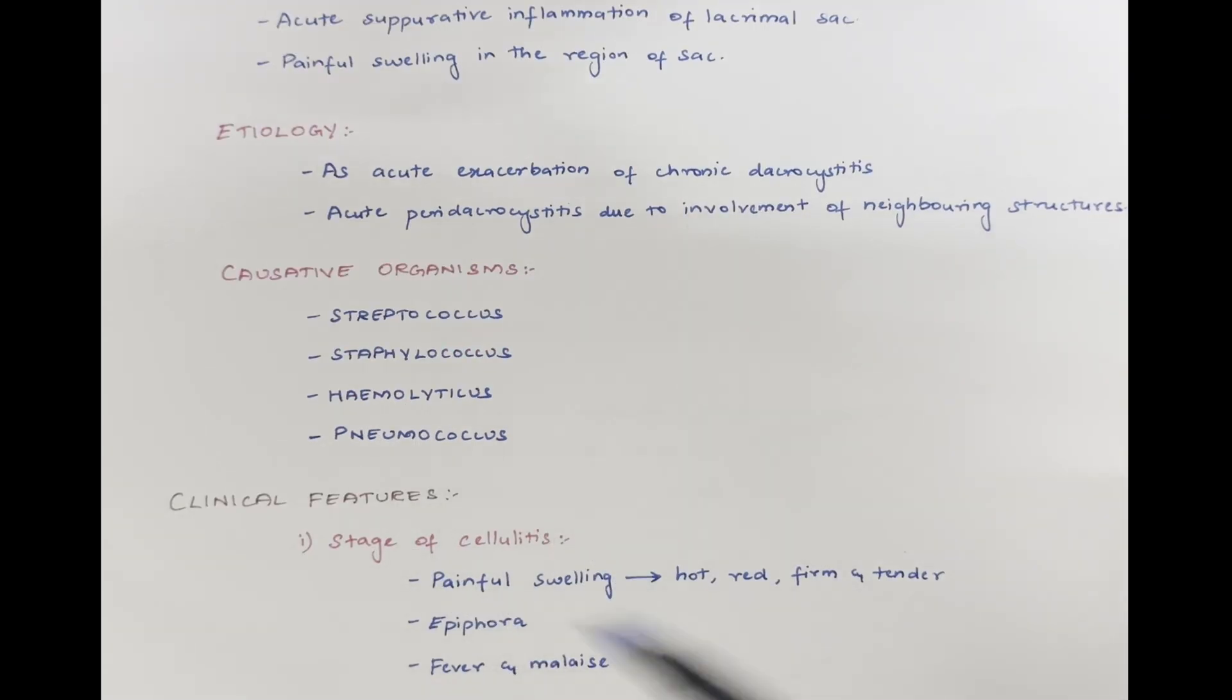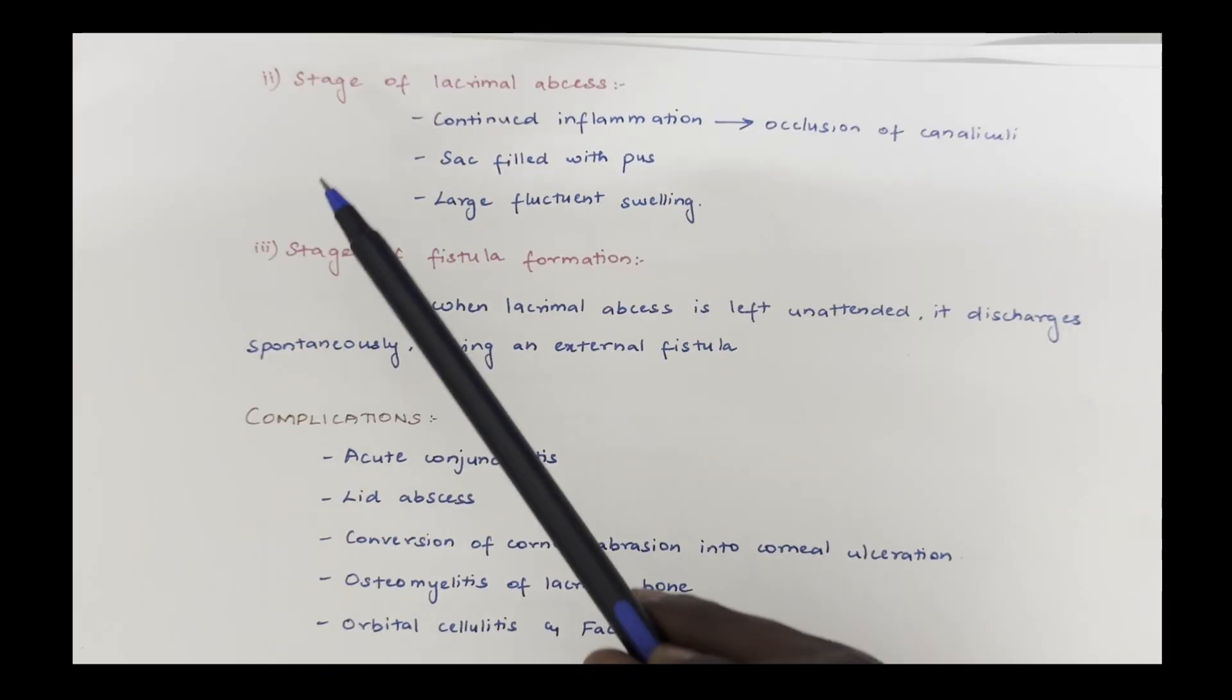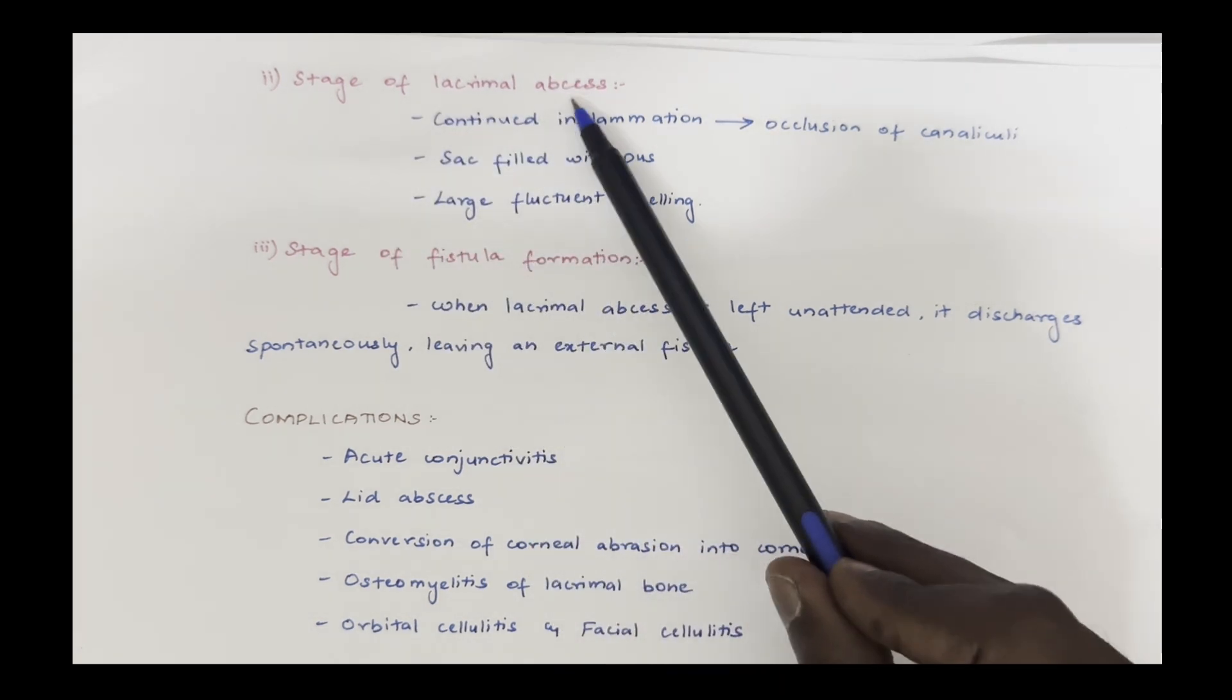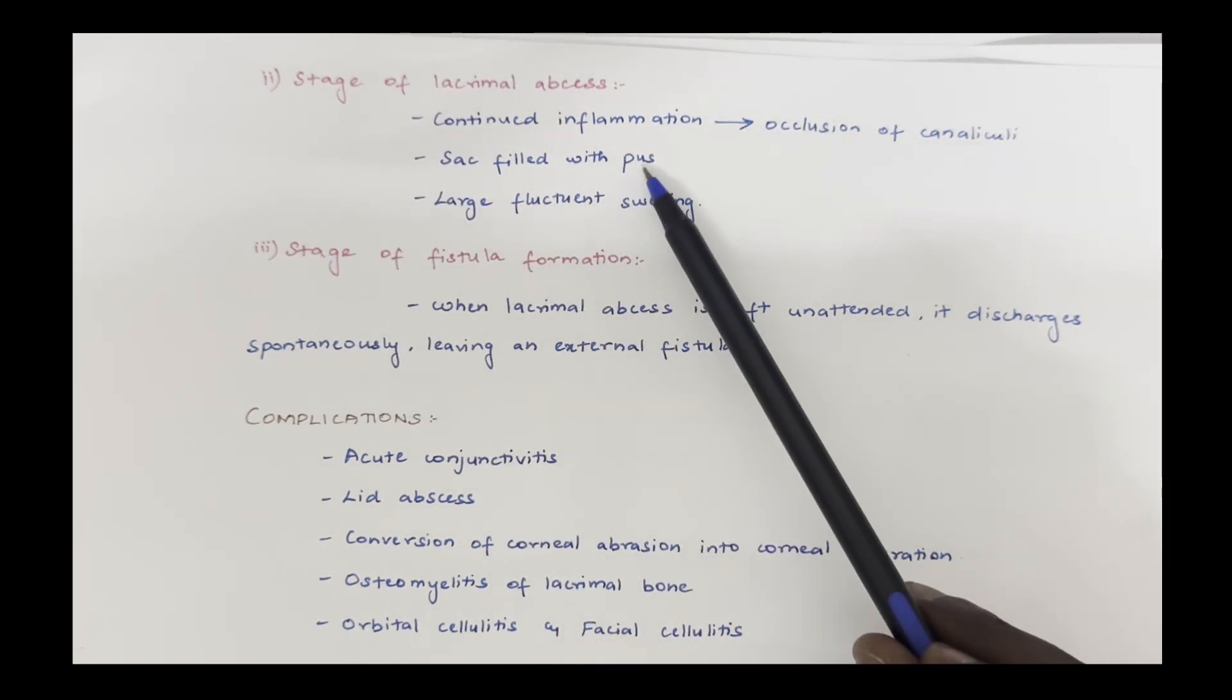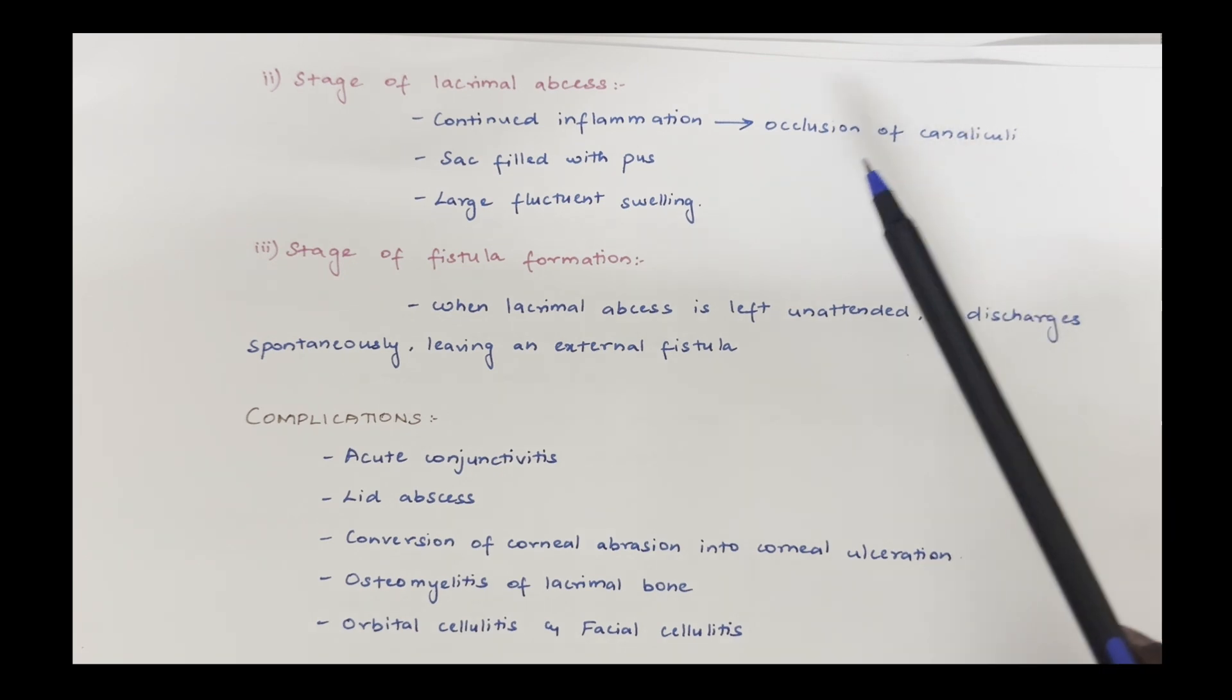Clinical features: there are three stages in acute dacryocystitis. The first stage is stage of cellulitis where there is a painful swelling which is hot, red, firm and tender to touch, meaning painful to touch. We can also see epiphora, fever and malaise.